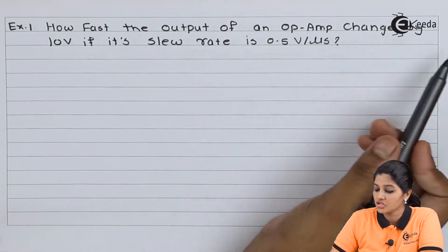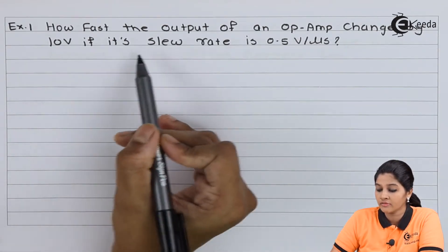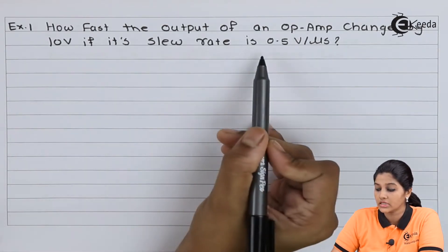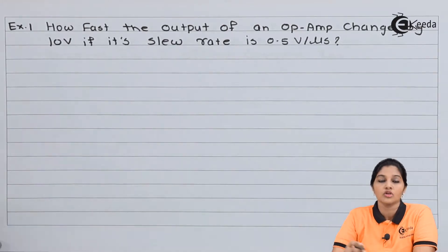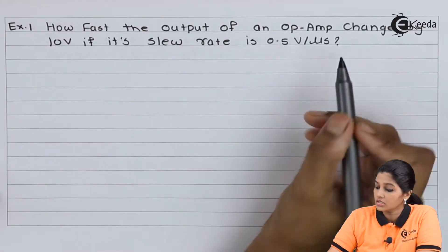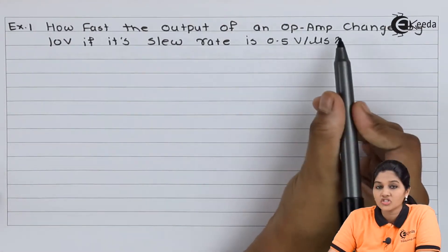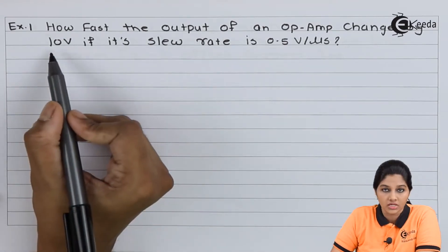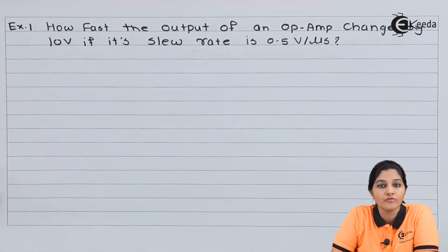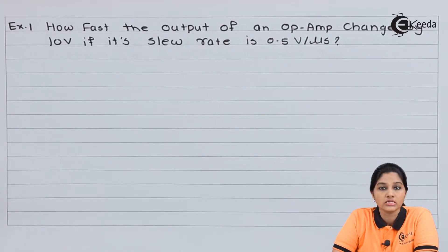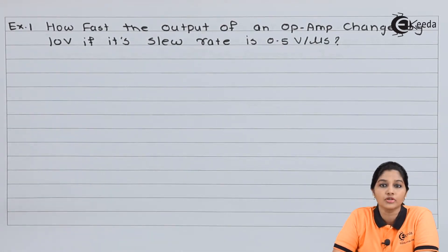How fast does the output of an op-amp change by 10 volts if its slew rate is 0.5 volt per microsecond? In this problem, the voltage change by op-amp is given as 10 volt and slew rate is given as 0.5 volts per microsecond. Basically, slew rate is nothing but rate of change of output voltage per unit time.